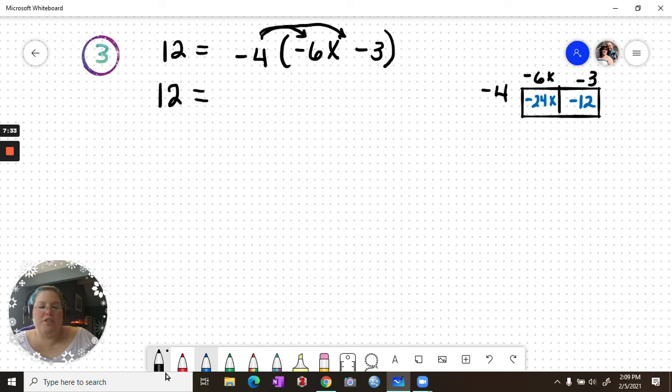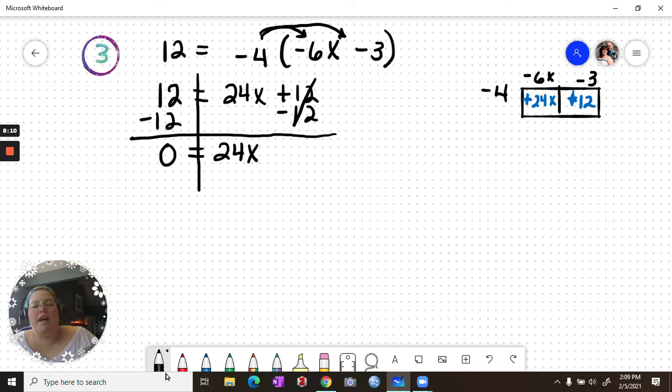That's negative 4. Negative 4, that's going to change things, because a negative times a negative is positive. Negative times a negative is positive. That impacts my whole problem, so I'm glad I caught that. Negative 4 times negative 6x is positive 24x. Negative 4 times negative 3 is positive 12. So we're simplifying first. Subtract 12 from both sides. 12 minus 12 is 0 equals 24x. Divide by 24, and we get x equals 0.